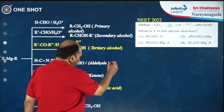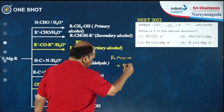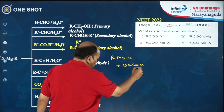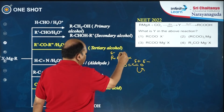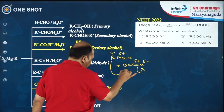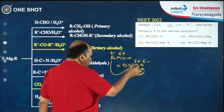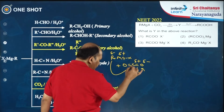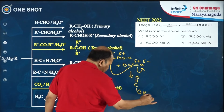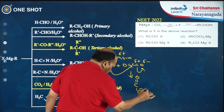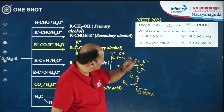The intermediate here is RMgX reacting with carbon dioxide. The carbon of CO2 has a delta positive charge, and the carbanion attacks that partially positively charged carbon. So the intermediate you are getting is R–C(=O)–O⁻MgX. This is the intermediate, meaning the answer is option 3.